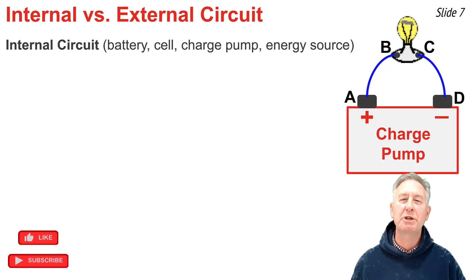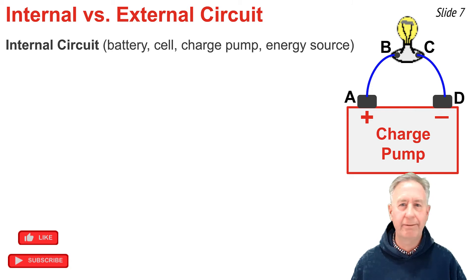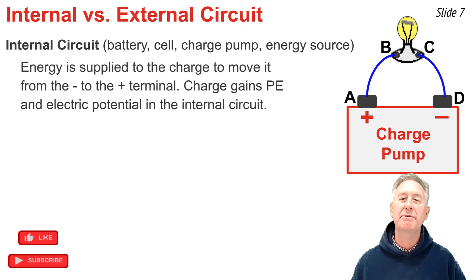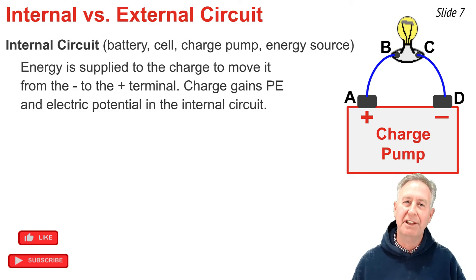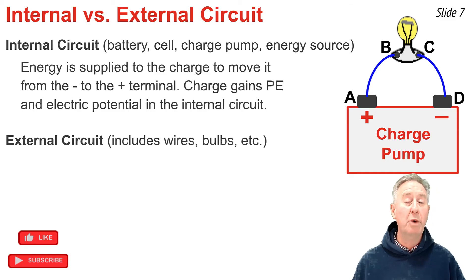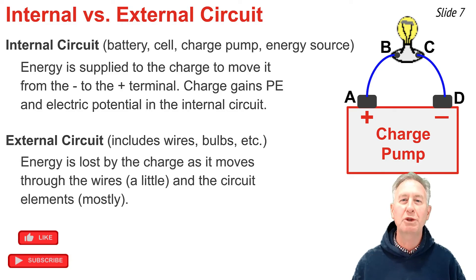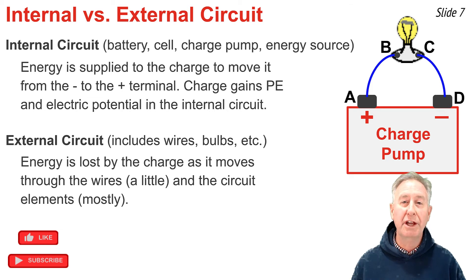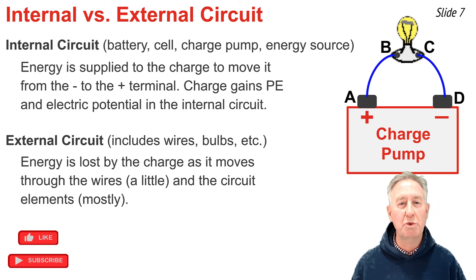It's useful to distinguish between the internal and the external circuit. The internal circuit includes the battery — the cell, the charge pump, the energy source, whatever you wish to call it. It's there that energy is supplied to the positive test charge to move it from the negative terminal to the positive terminal, causing it to gain energy and electric potential. The external circuit includes the wires and light bulb — or motor, if present. It's there that the positive test charge loses its electric potential, as electrical potential energy is transformed into light energy or, if it's a motor, into mechanical energy, resulting in a tremendous drop in electric potential.